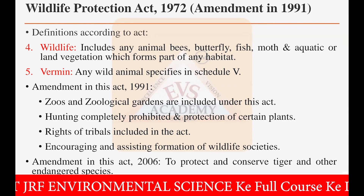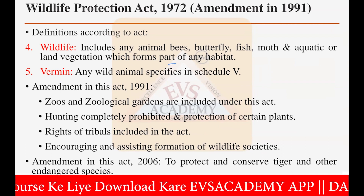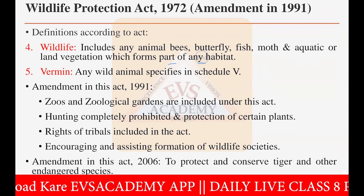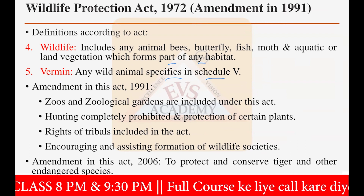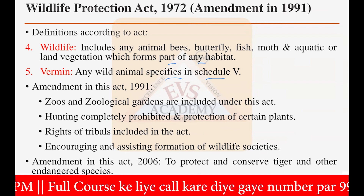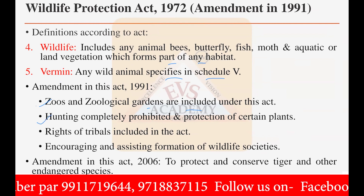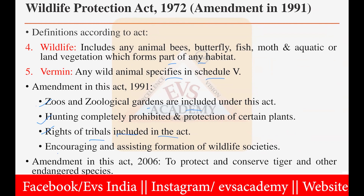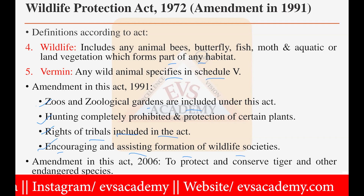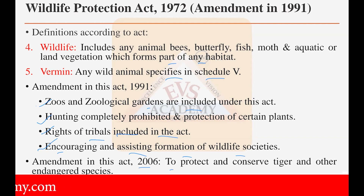Wildlife includes any animal, bees, butterflies, crustaceans, moths, and aquatic or land vegetation which forms part of any habitat. 'Vermin' refers to any wild animal species listed in schedule five. The 1991 amendment also included zoos and geological gardens under this act, completely prohibited hunting, provided protection for certain plants, recognized rights of tribals and local forest peoples, and encouraged formation of wildlife societies.